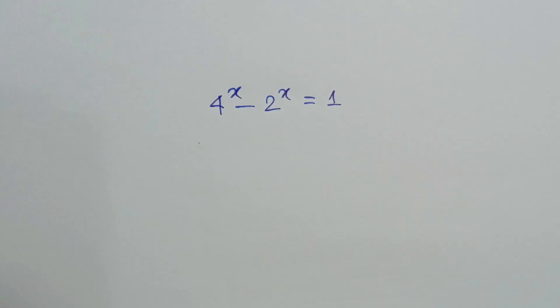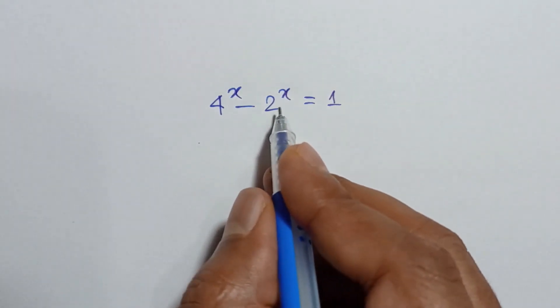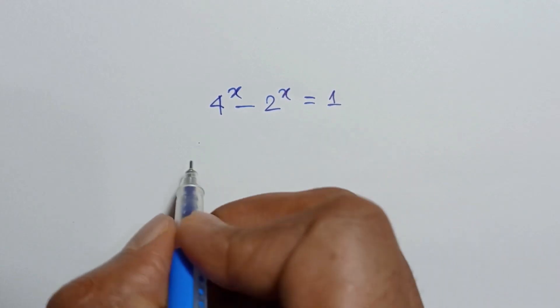Hi everyone. I am going to show how to solve 4 to the power x minus 2 to the power x is equal to 1.